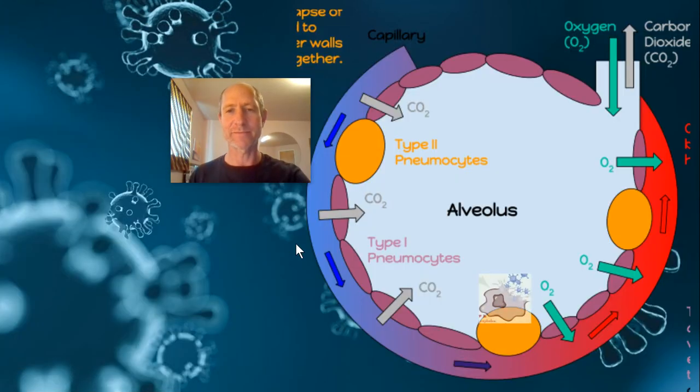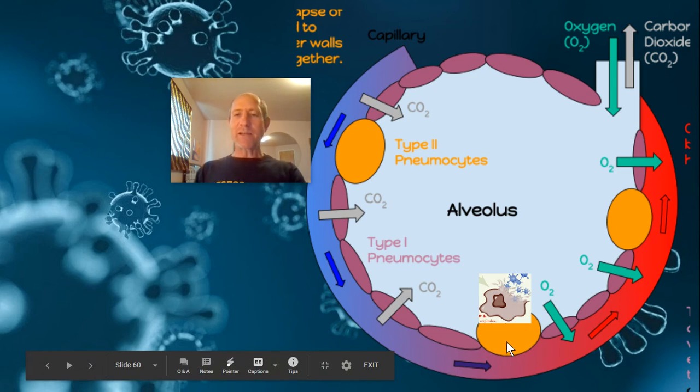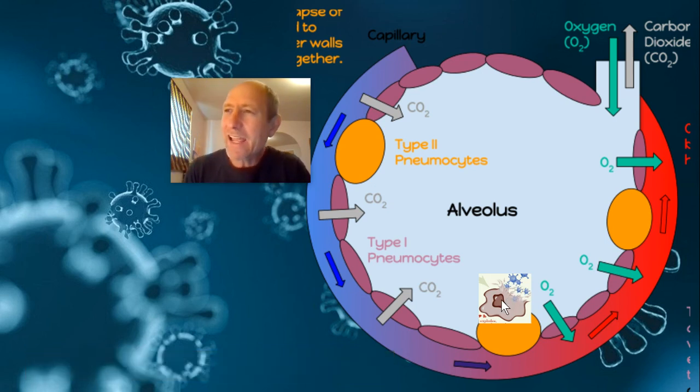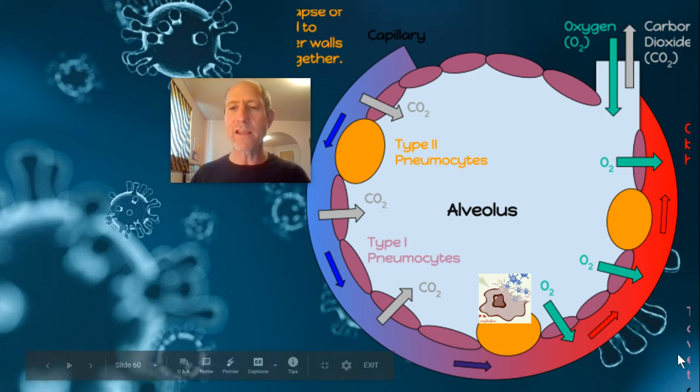So here's this type 2 pneumocyte, type 1 pneumocyte, type 2 pneumocyte, type 2 pneumocyte, type 1 pneumocyte. Here's this type 2 pneumocyte. I'm showing it bursting forth with these viral particles. And yeah, that seems kind of bad, but I think what you guys might be kind of surprised to learn is that that's not what necessarily causes the symptoms of this disease. The coughing and the fever and the difficulty breathing. This alone isn't going to do this. Here's how the disease really starts to take a turn for the worse.